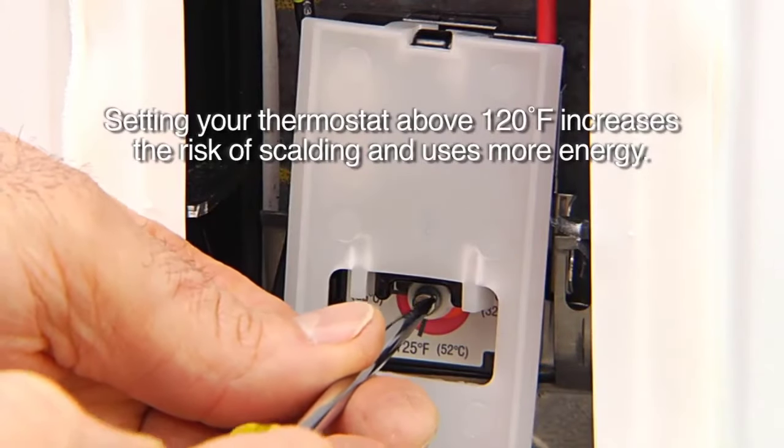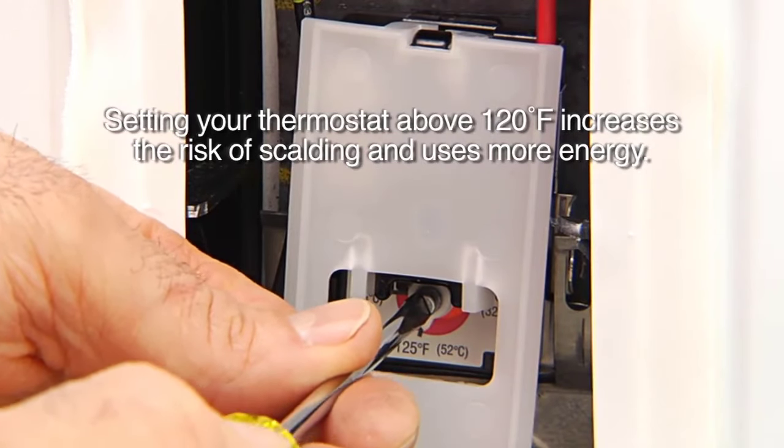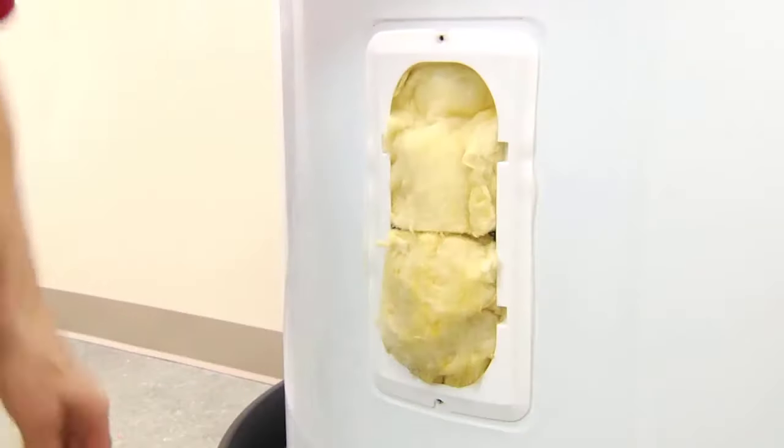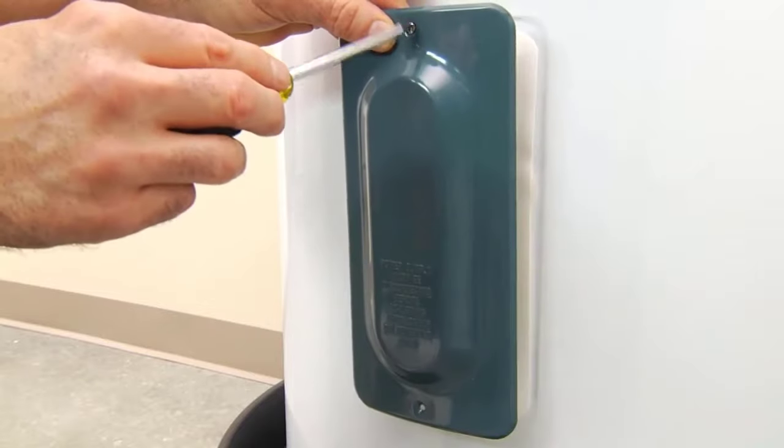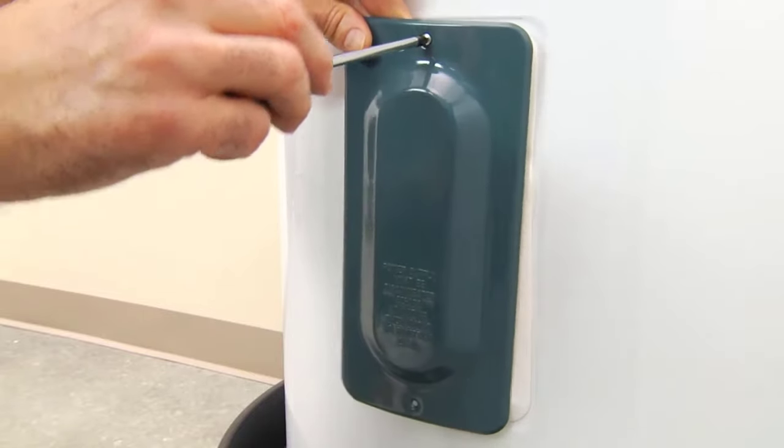Finally, adjust the new thermostat so the water temperature doesn't exceed 120 degrees Fahrenheit. Replace the insulation and cover panel and you're done. Turn the power back on to the water heater at the circuit breaker.